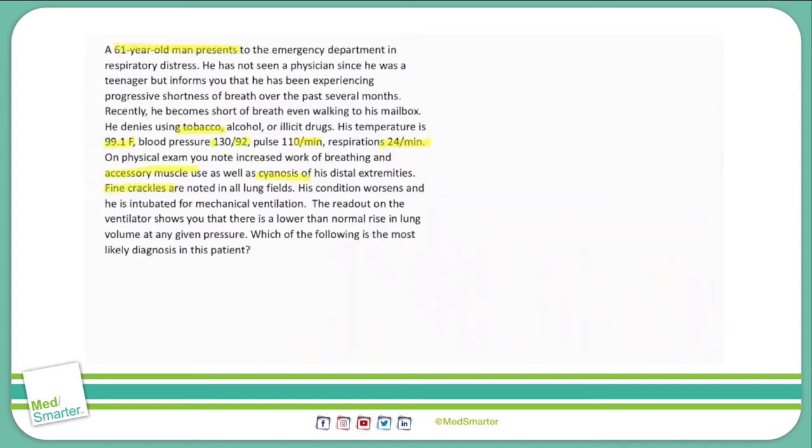Condition worsens and he's intubated for mechanical ventilation. The readout on the ventilator shows you that there is a lower than normal rise in lung volume for any given pressure. From studying physiology, I know that the rise in lung volume for any given amount of pressure is also known as compliance. So if it's lower than normal, we're talking about a condition that causes decreased compliance. Which of the following is the most likely diagnosis in this patient?